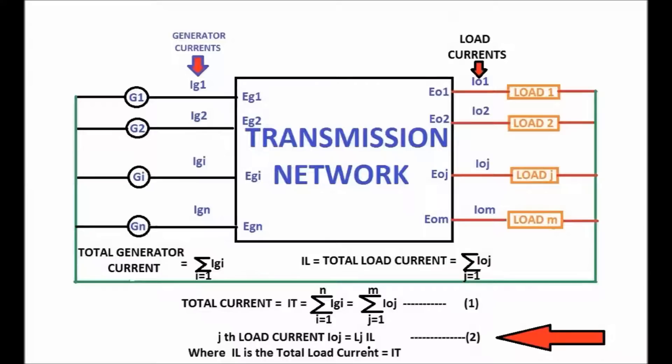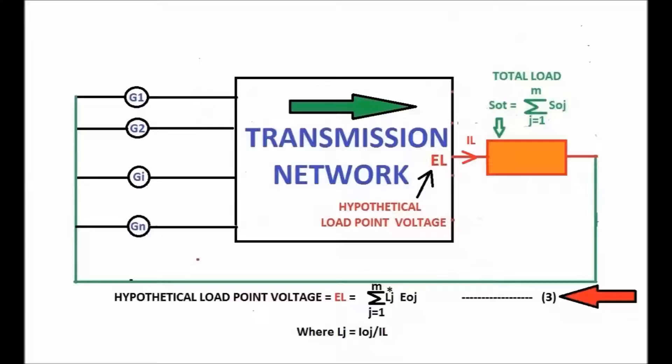The hypothetical load point voltage EL is arrived at after performing many matrix operations. The voltage EL equals the sum of the product of complex conjugate of the fraction Lj with the load voltage Eoj, as in Equation 3.